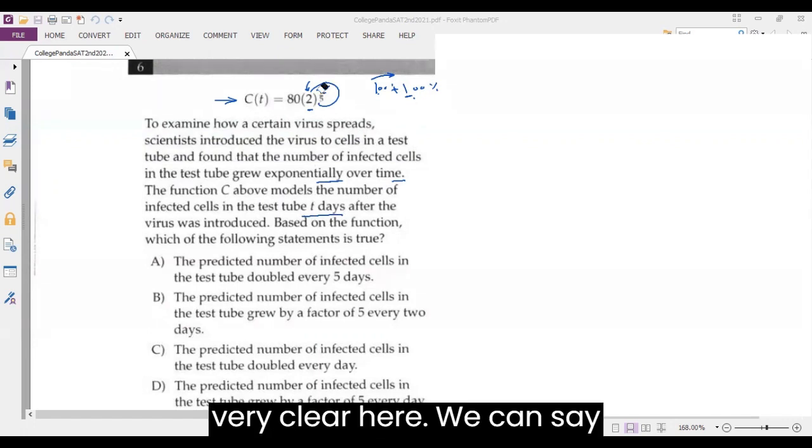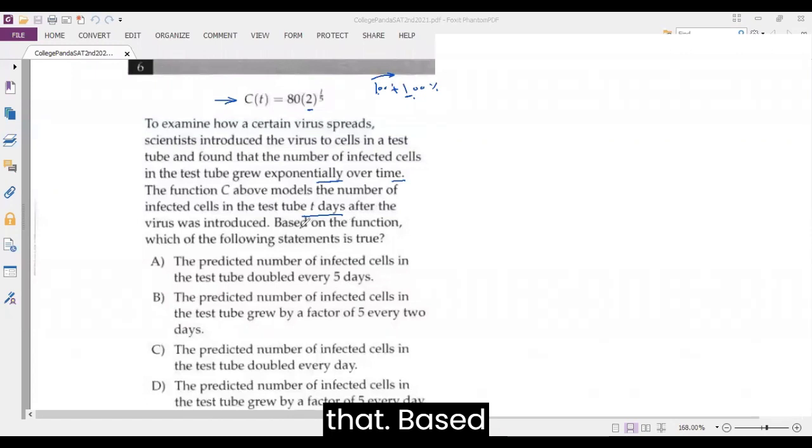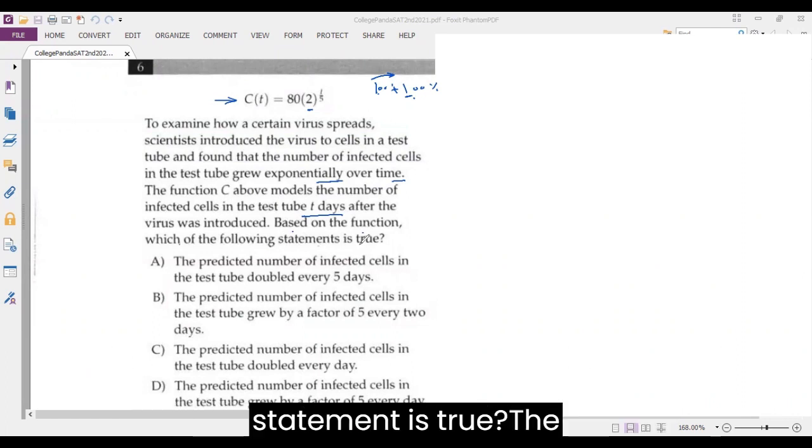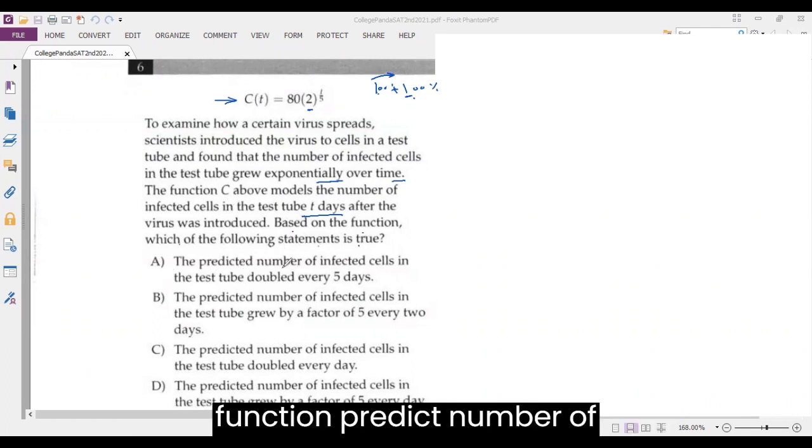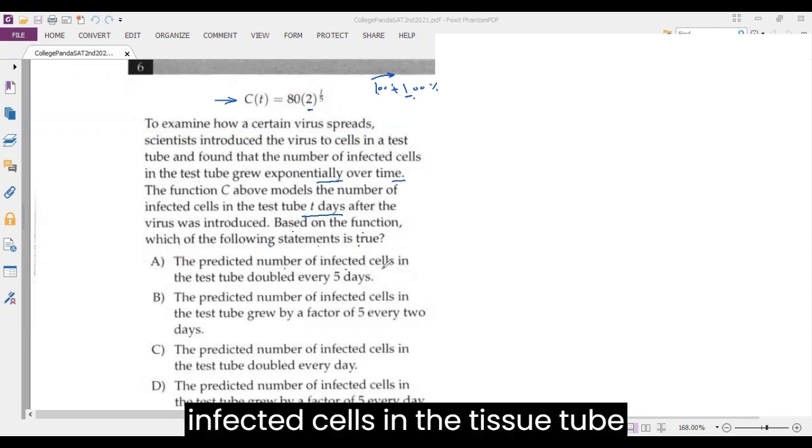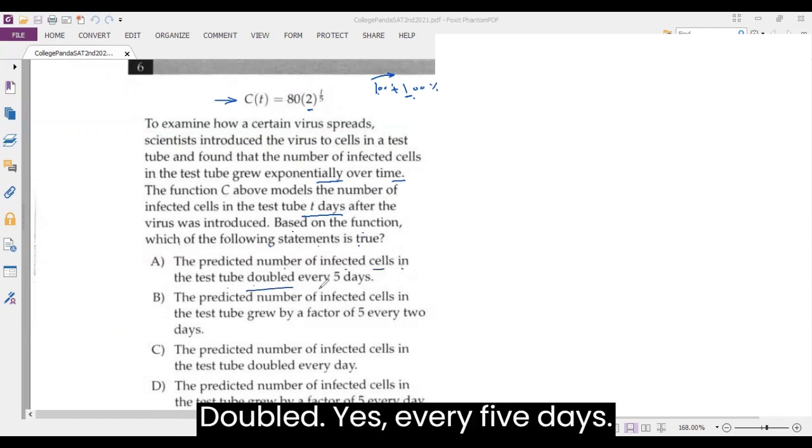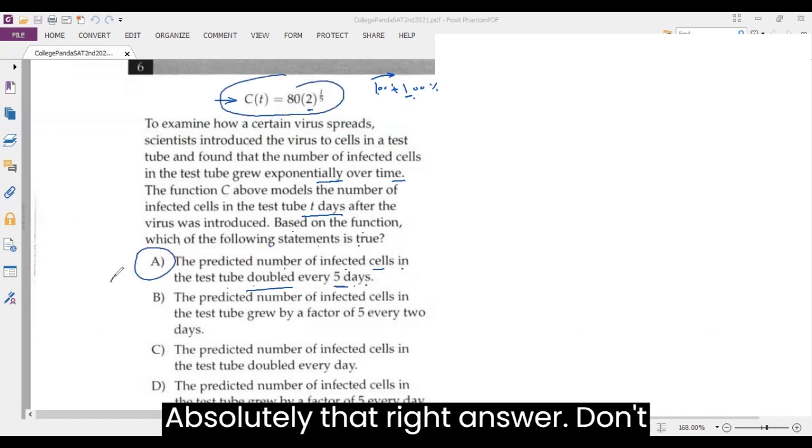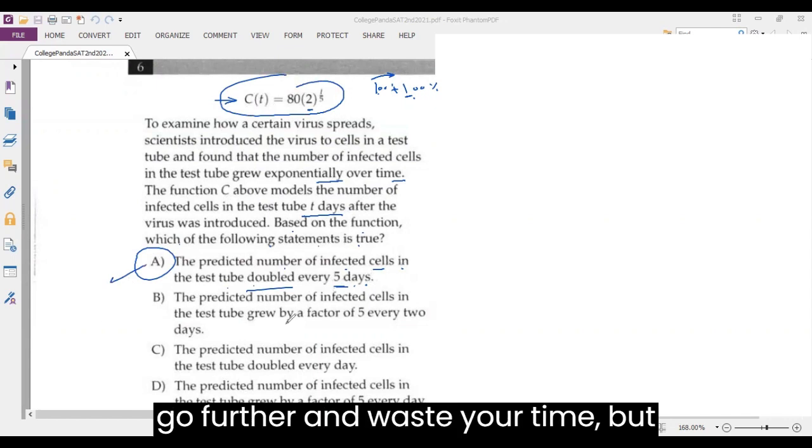So this is very clear here. We can say that based on the function, which of the following statement is true? The function predicts the number of infected cells in the test tube doubled, yes, every five days, yes. This is absolutely the right answer. Don't go further and waste your time.